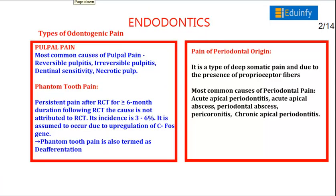There are odontogenic pain and non-odontogenic pain. For odontogenic pain, there are pulpal pain and periodontal origin pain. The most common causes of pulpal pain are reversible pulpitis, irreversible pulpitis, dentine sensitivity, and necrotic pulp.